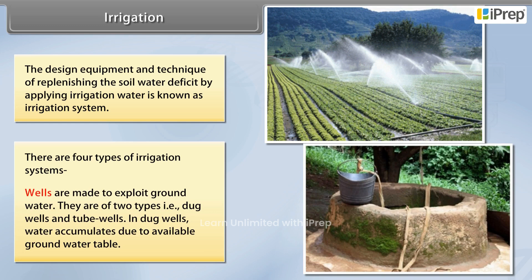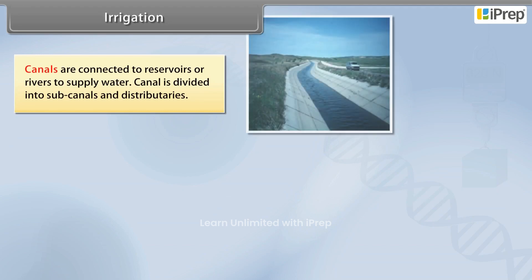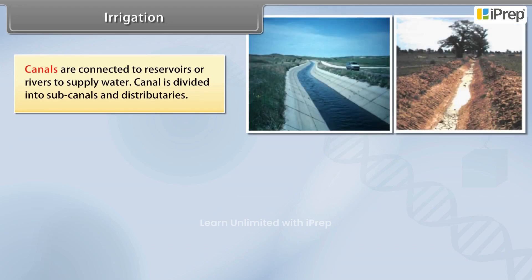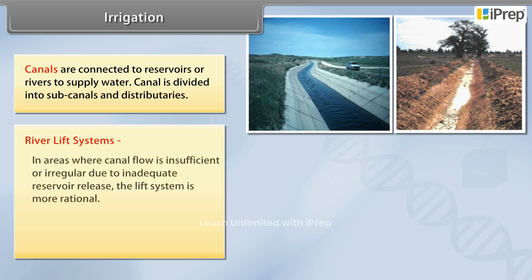Wells are made to exploit groundwater and are of two types: dug wells and tube wells. In dug wells, water accumulates due to the available groundwater table. Canals are connected to reservoirs or rivers to supply water, and a canal is divided into sub-canals and distributaries.